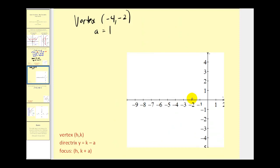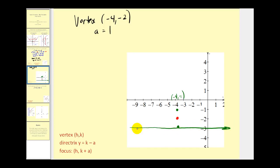Let's graph this. The vertex is negative 4, negative 2 — that's one point on the parabola. Since this parabola opens up, the focus will be 1 unit above the vertex. The coordinates of the focus would be negative 4, negative 1. The directrix would be 1 unit below the vertex, which is the horizontal line y equals negative 3.